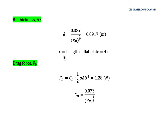The plate length is 4 meters. To calculate the drag force, we use F_D = C_D × (1/2) × ρ × A × U². The drag coefficient C_D = 0.073 is obtained from the von Kármán solution with the 1/7 power law, where u/U = (y/δ)^(1/7). Substituting all values, we get a drag force of 1.28 Newtons.